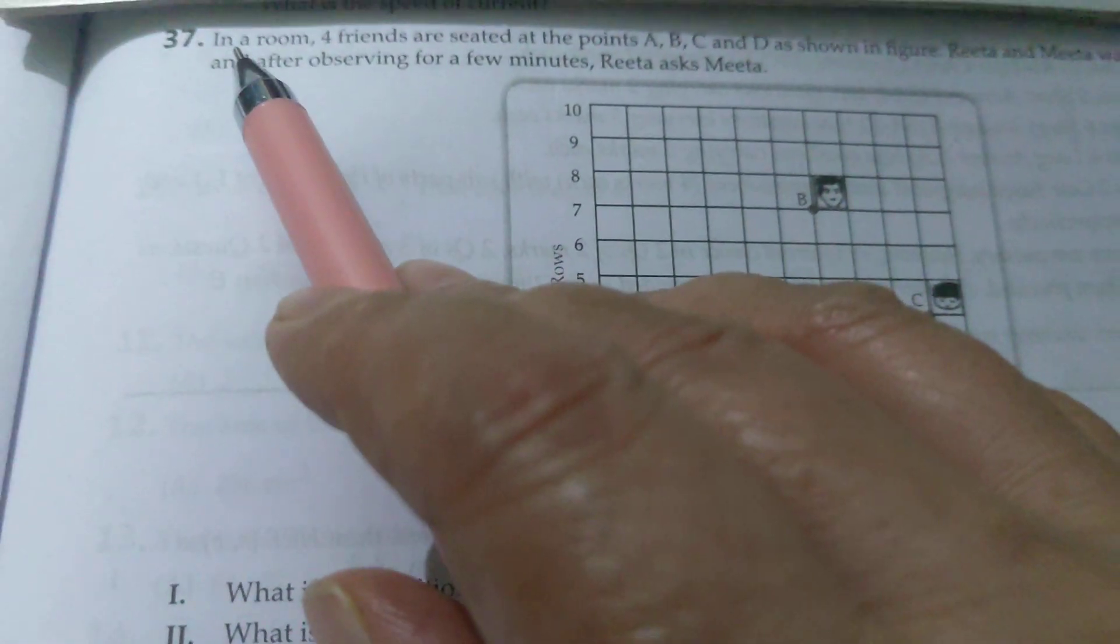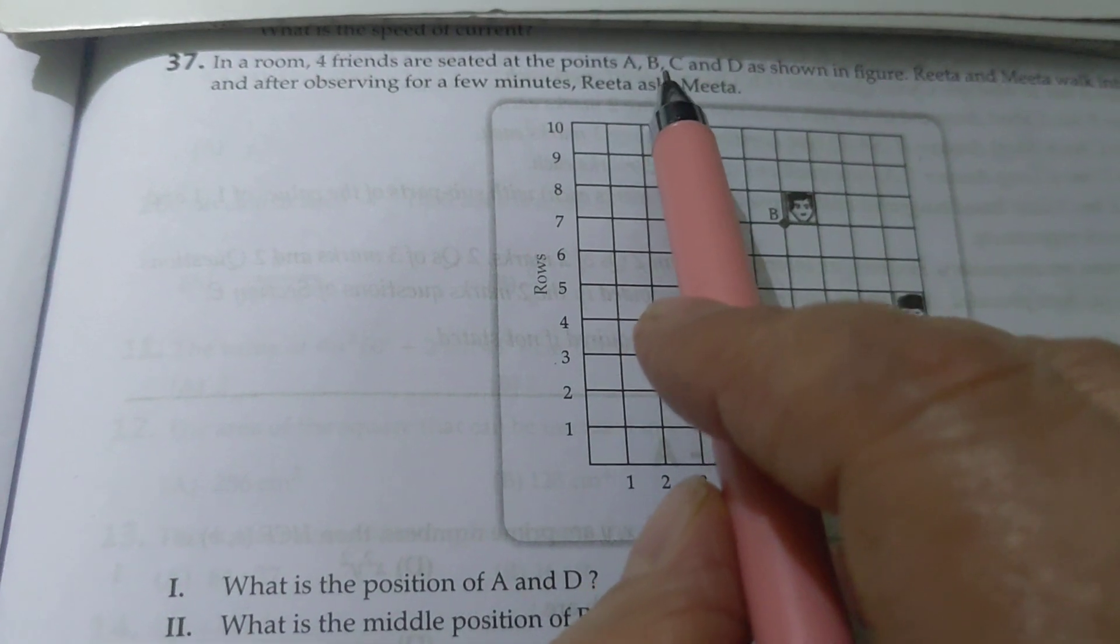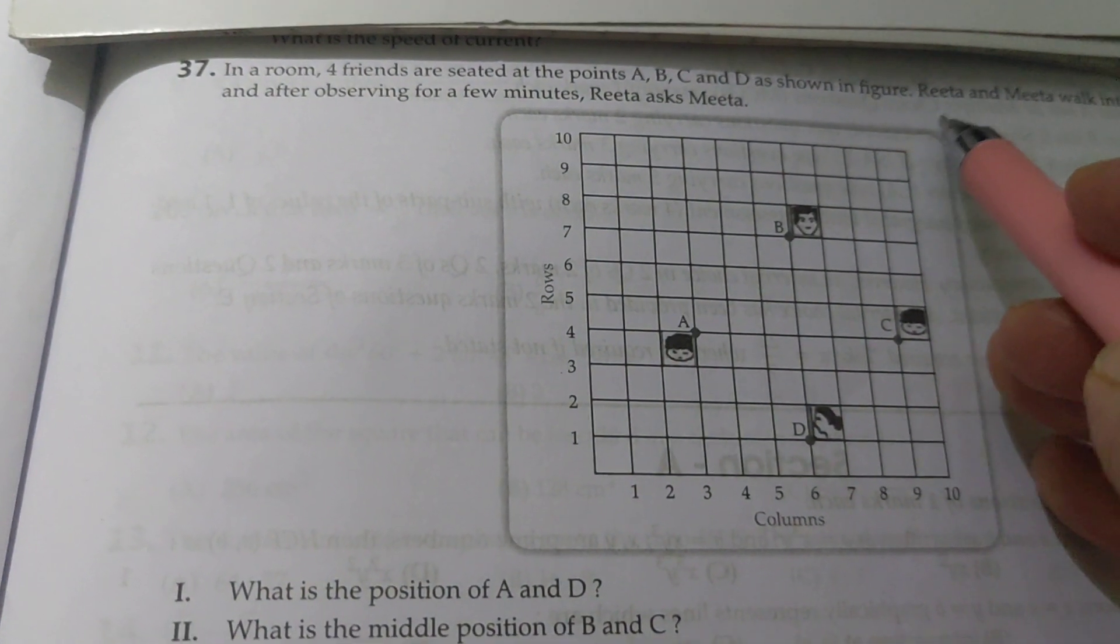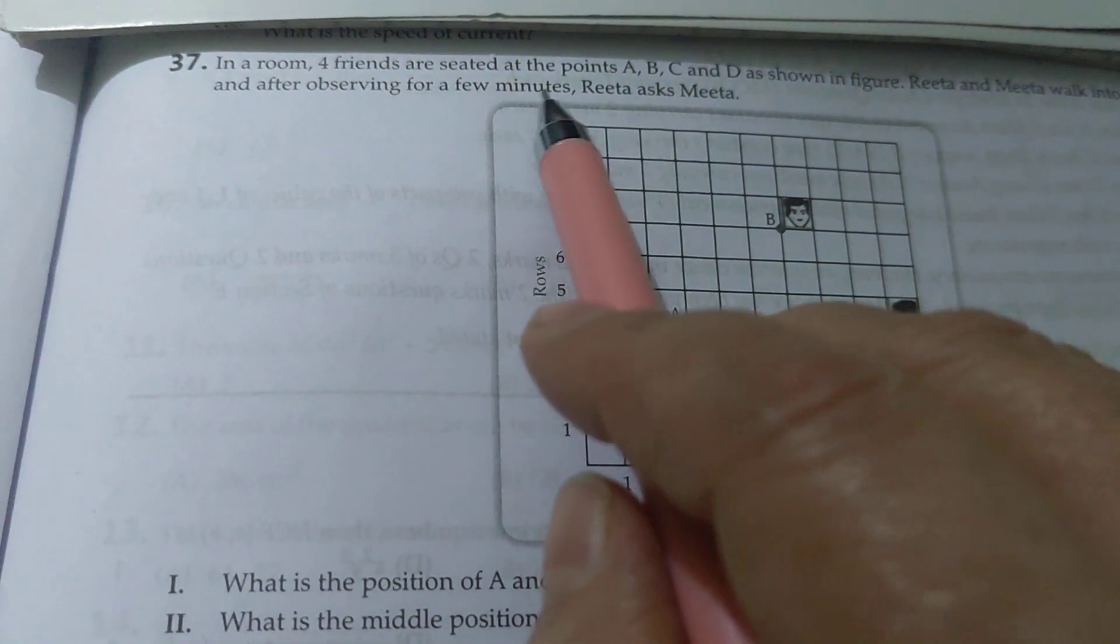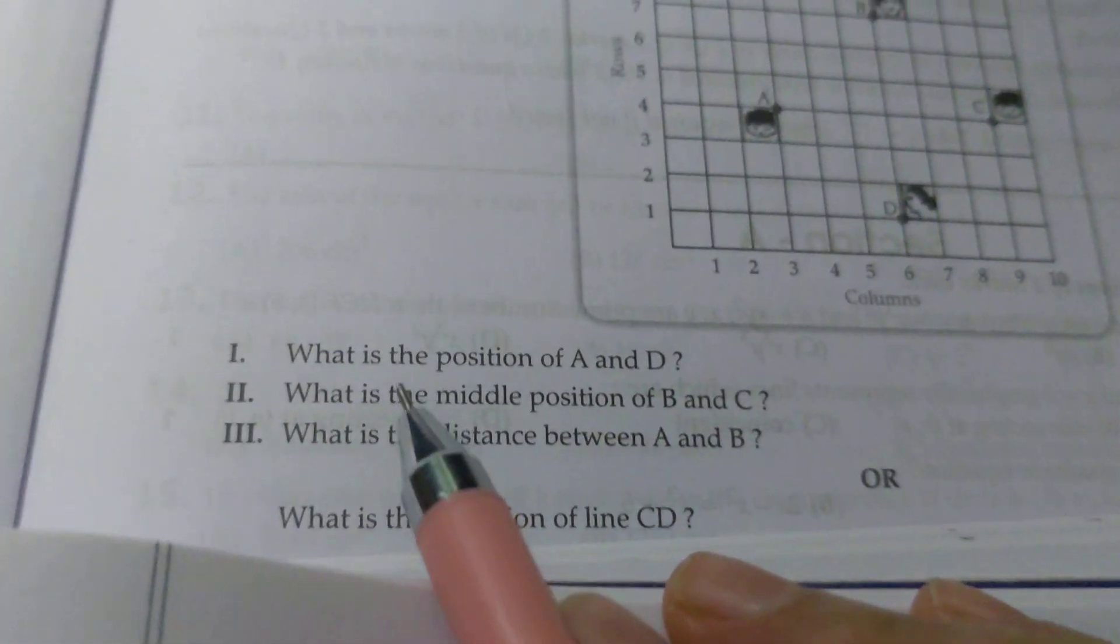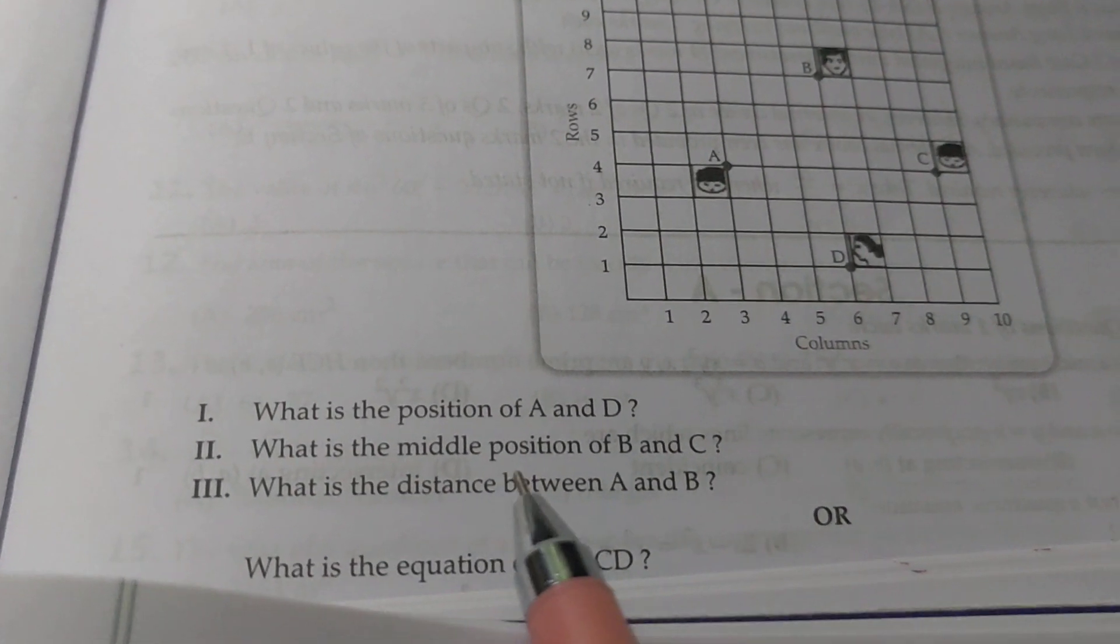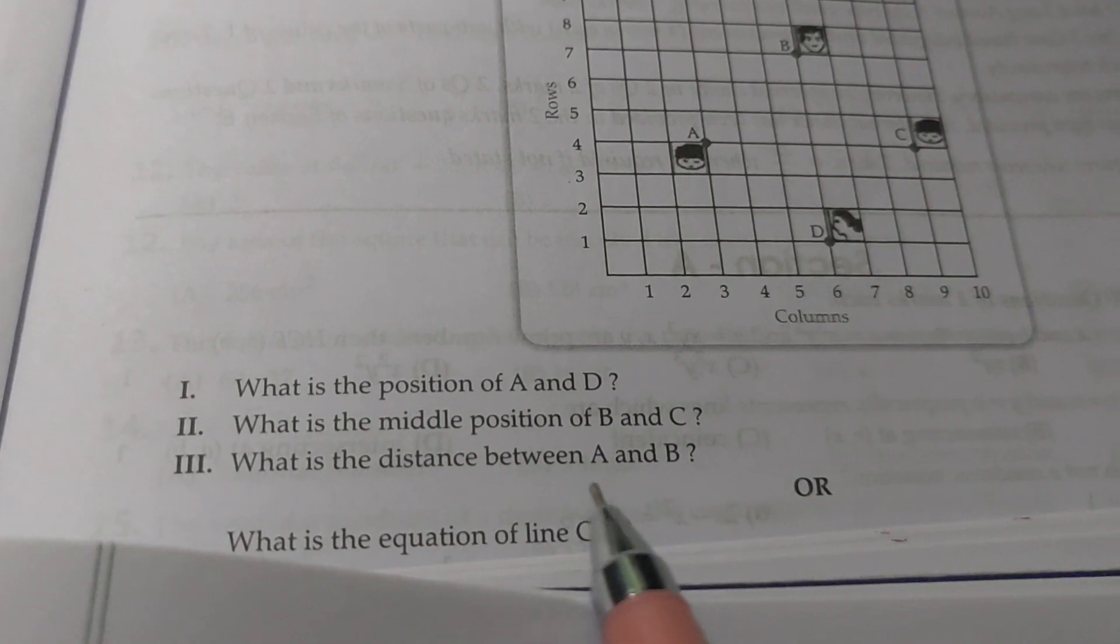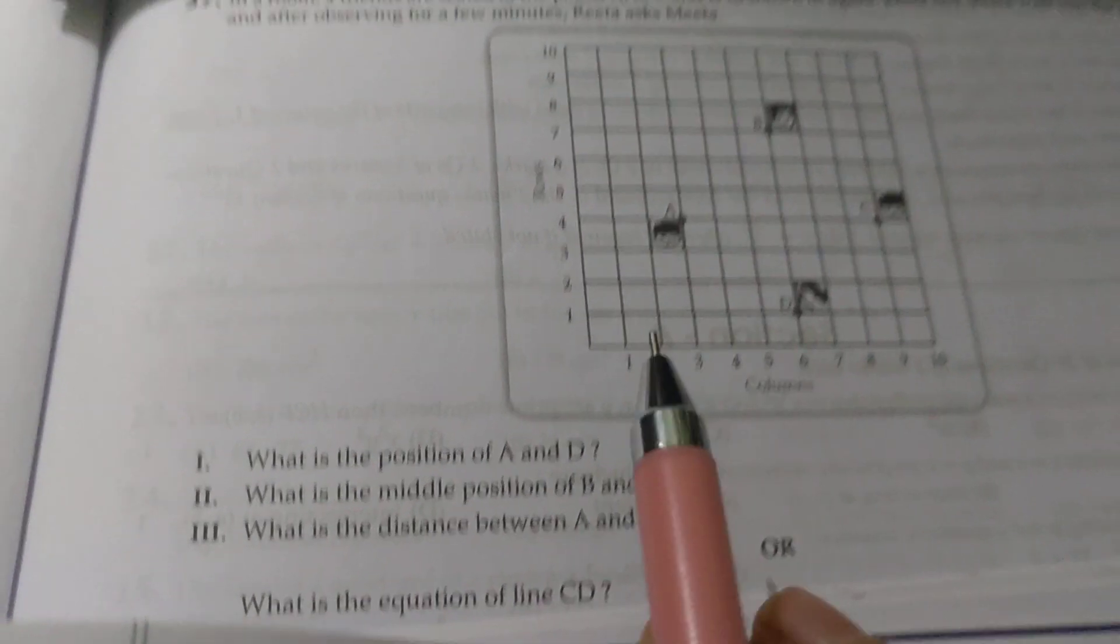Hello friends, aaj ka question hai. In a room, four friends are seated at the points A, B, C and D as shown in the figure. Rita and Meeta walk into the room and after observing for a few minutes, Rita asks Meeta: What is the position of A and D? Second, what is the middle position of B and C? What is the distance between A and B? And what is the equation of line CD?